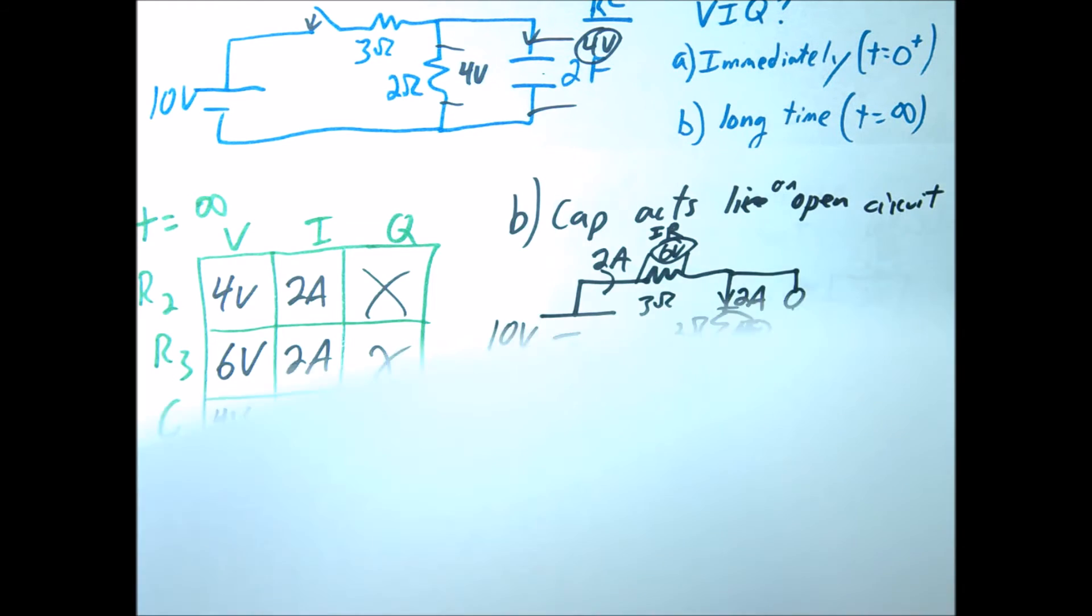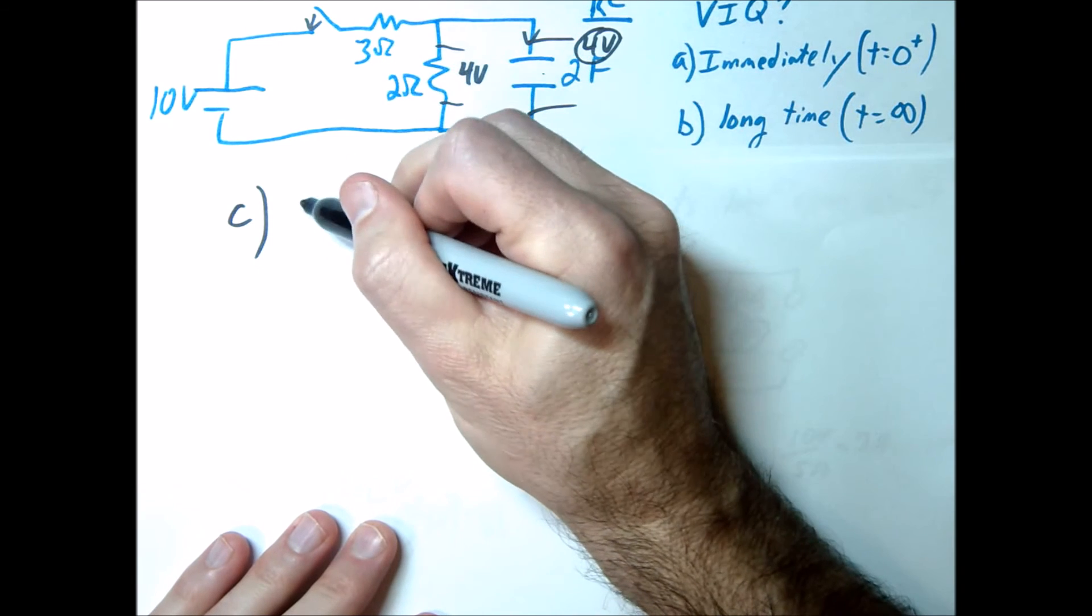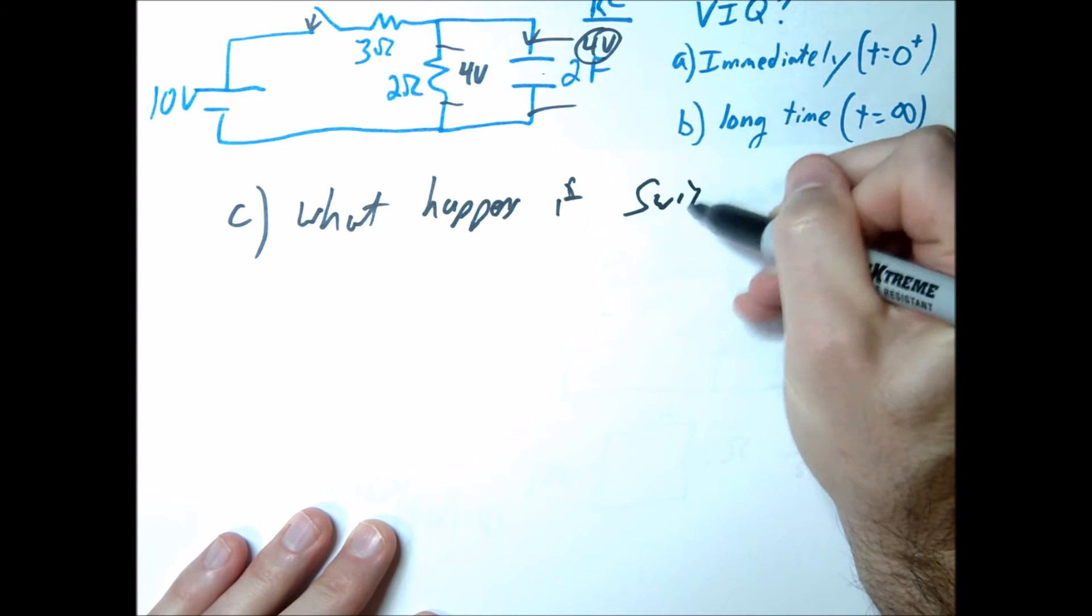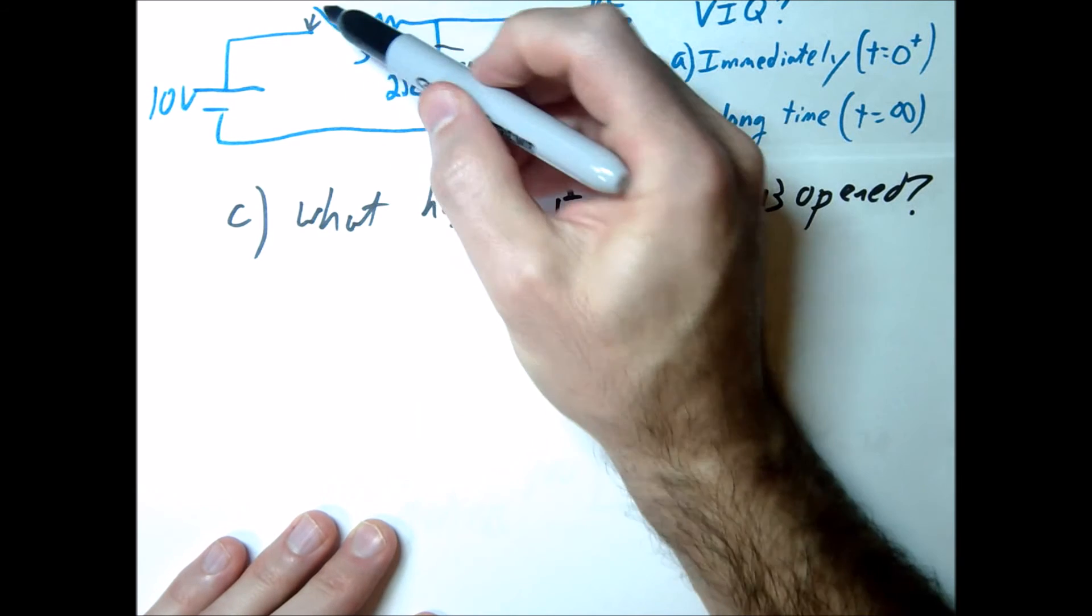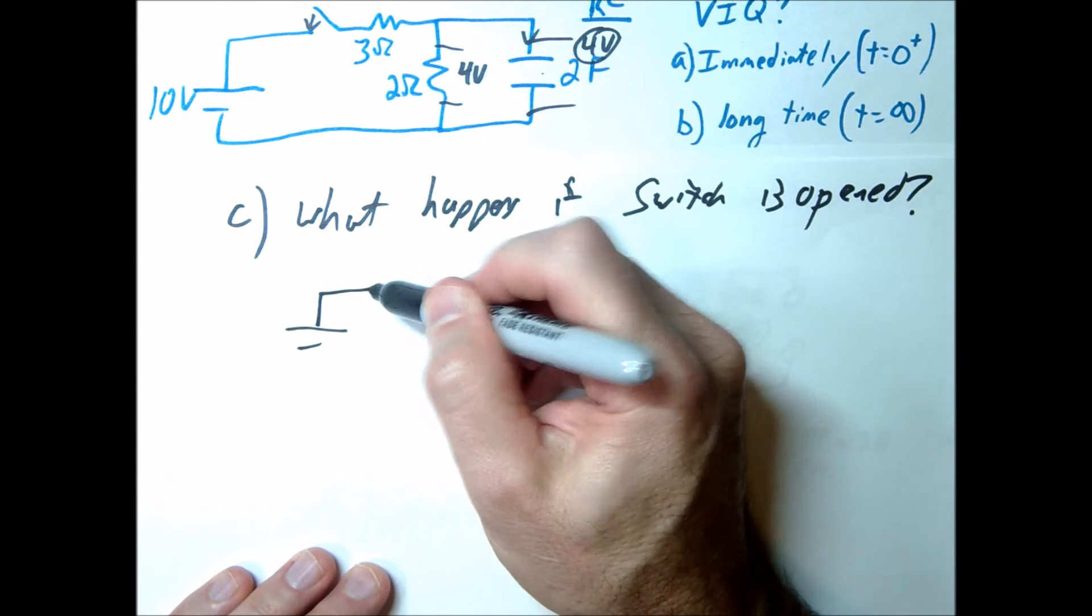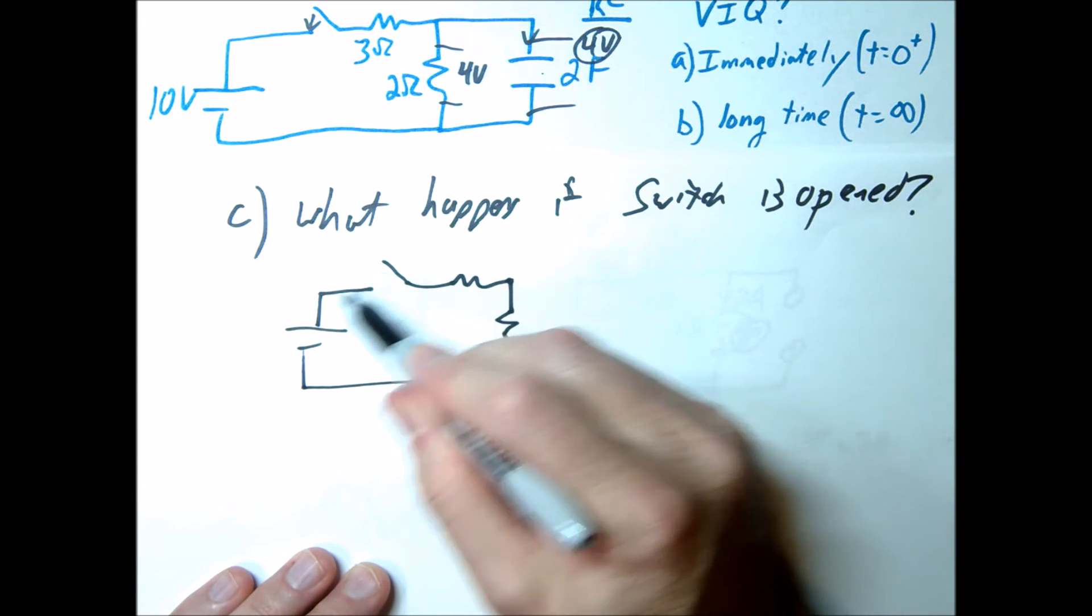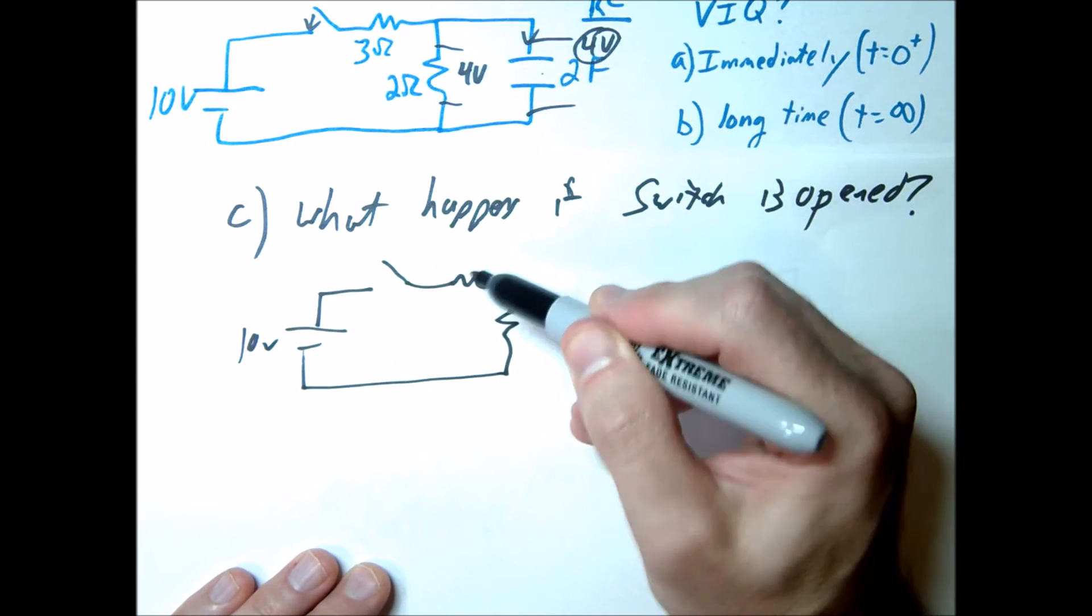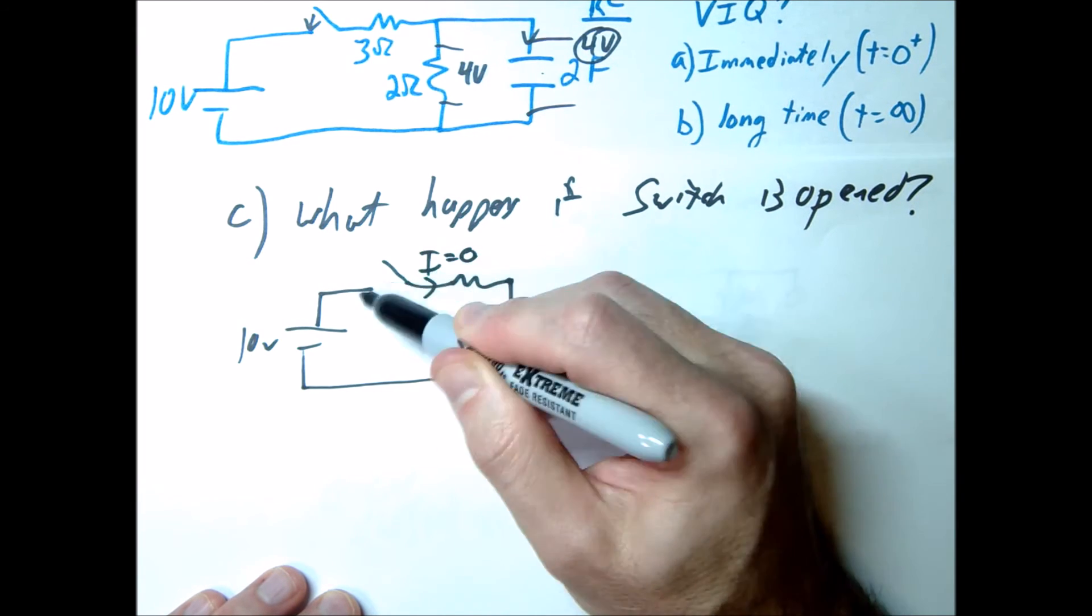So I want to add one more question to this problem. What happens if we now all of a sudden open the switch? What happens if the switch is open now? Our switch has been closed. Now we're going to open this back up. Well, notice what happens. We just now open this up. So we've stopped this charge source here. We stopped this voltage source from providing a source to the circuit. So there's going to be zero current through here once we open this up.